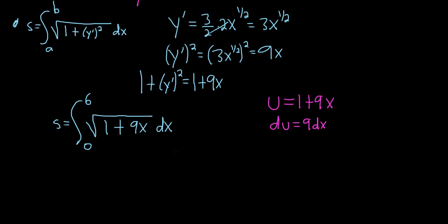So then our du will simply be 9 dx. Now we don't have a 9 in our integrand, so we have to divide both sides of this by 9. So this is 1 ninth du, and that's equal to dx.